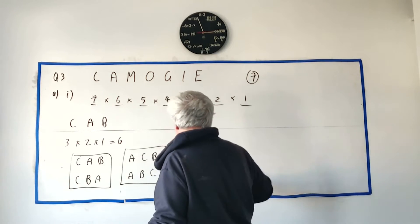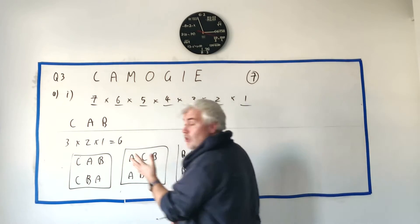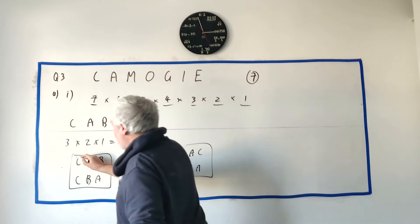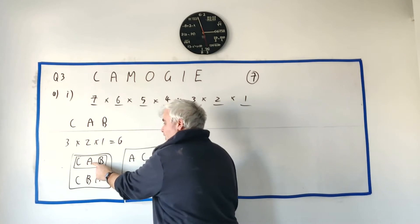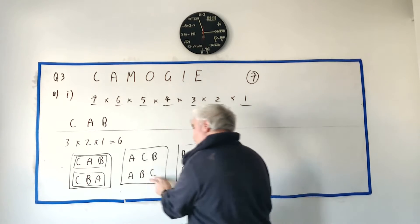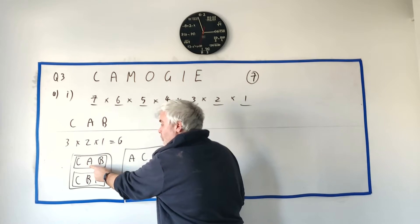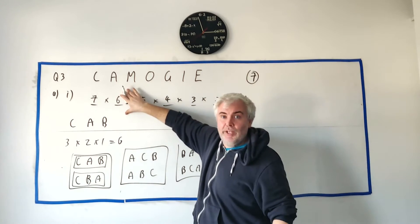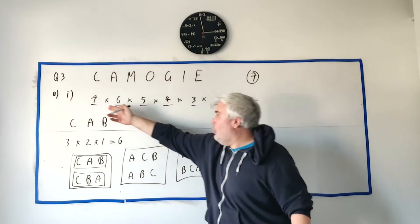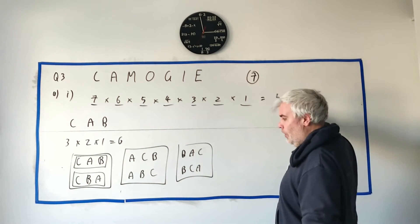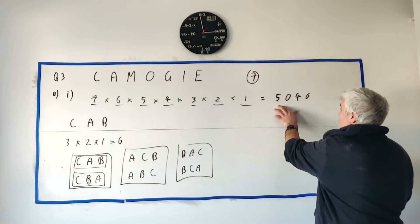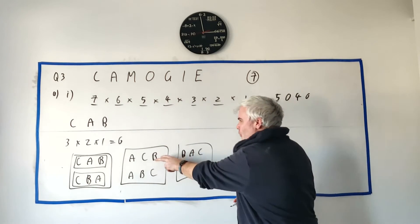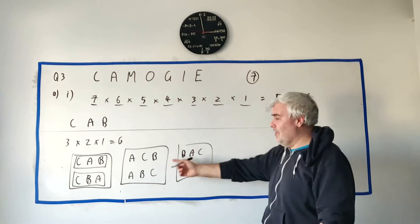The great thing about 'CAB' is I can write all the arrangements down: CAB, CBA, ACB, ABC, BAC, BCA — only six different ways. There are three different choices for the first letter (C, A, or B), two choices for the second letter, and once two letters are chosen, there's only one choice left for the last. That same logic applies to 'camogie', giving us 5040 — that's the answer to part one.